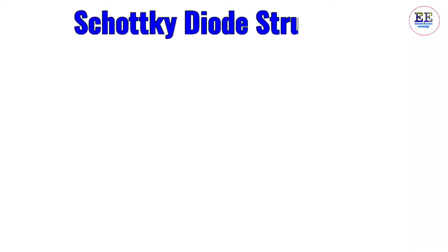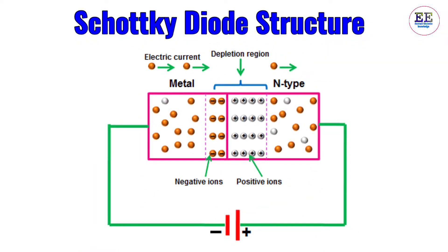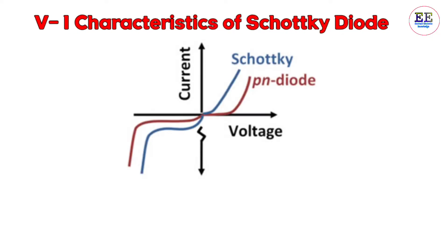Now let's look at the Schottky diode layer structure. You can see the layer structure of the Schottky diode here: a metal side and a semiconductor side are joined to create a junction. When this junction is formed, a small depletion layer is created across it. It has two terminals — anode connected to the metal side and cathode connected to the semiconductor side.